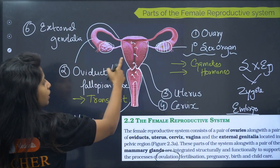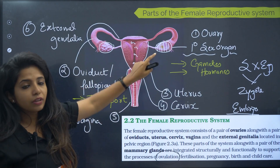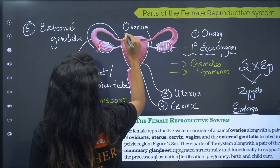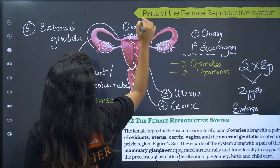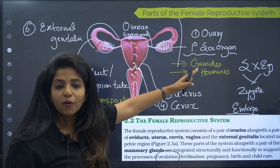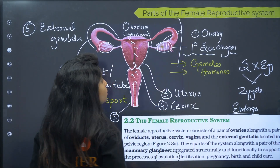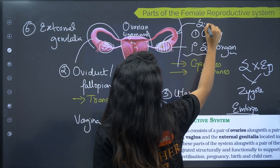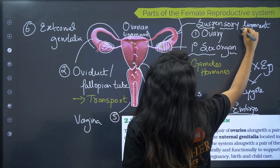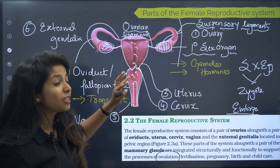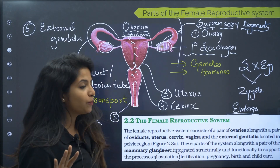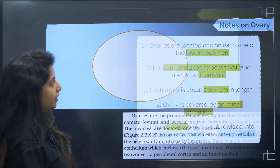The ovary is connected to the pelvic wall and the uterus by ligaments. The ligament connecting the ovary to the uterus is called the ovarian ligament. The ligament connecting the ovary to the pelvic wall or lower abdominal wall is called the suspensory ligament. So: ovarian ligament connects ovary to uterus, and suspensory ligament connects ovary to the pelvic wall.